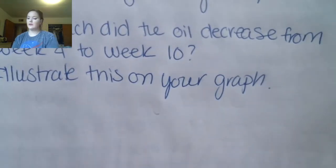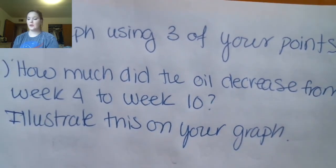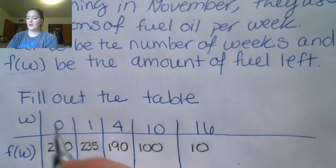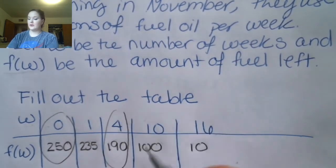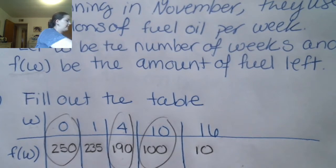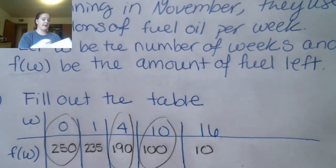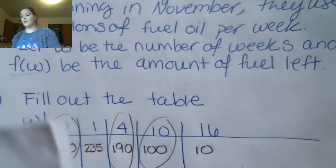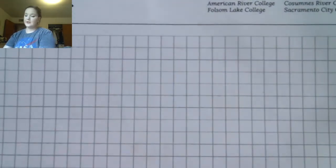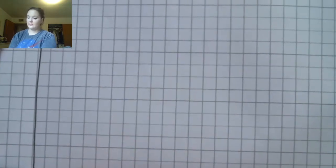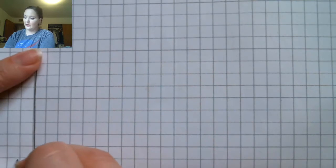For part C, it says graph using three of your points. We're going to pick three points from the table. One thing to emphasize — when you are graphing this, you need to pick a scale so that all of your points will fit on your graph. Because we're not going to have any negative time, we don't need to show the negative x-axis. Your input variable goes on the x-axis and your output variable goes on the y-axis.